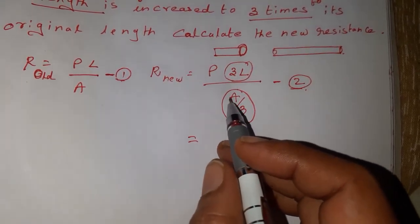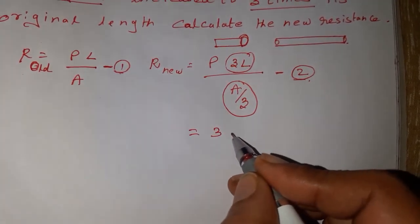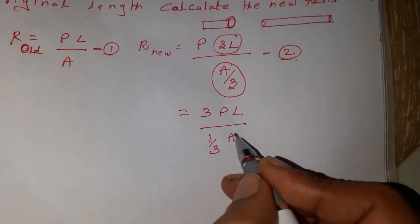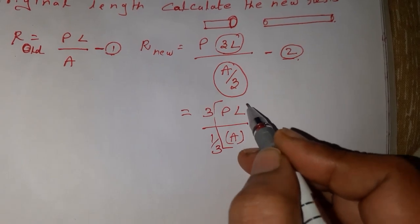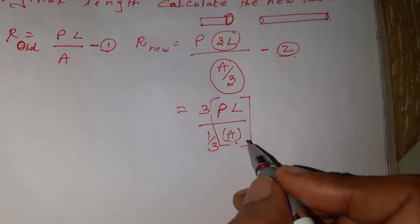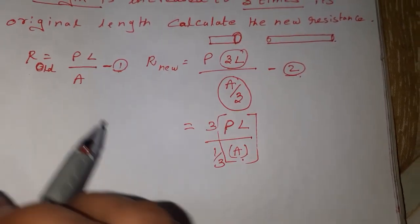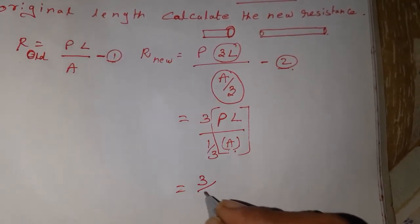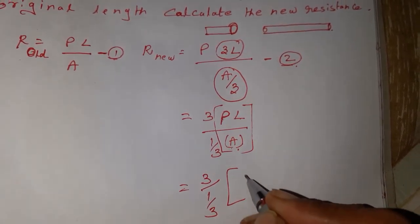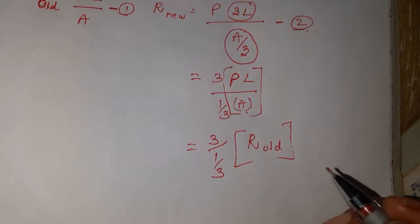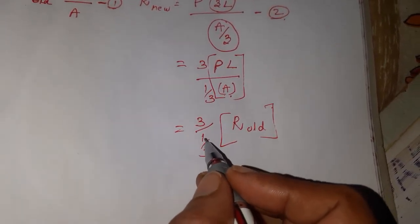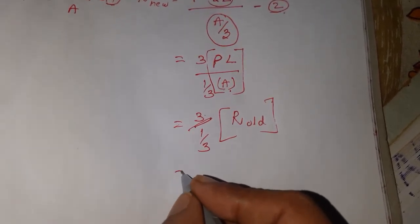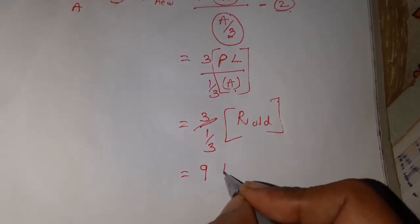In the second equation, we bring the 3 outside: R_new equals rho times 3L divided by (1/3)A. We can see that rho times L divided by A is the same as the R_old formula, so we replace rho·L/A with R_old. This gives us 3 divided by (1/3) times R_old. In the division, 1/3 rises as a reciprocal and multiplies with the numerator, giving 9 times R_old.